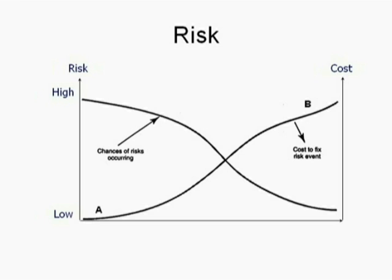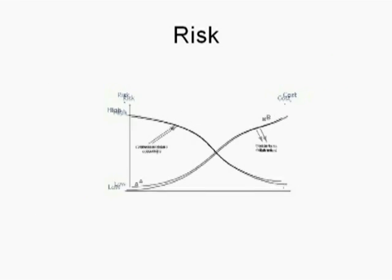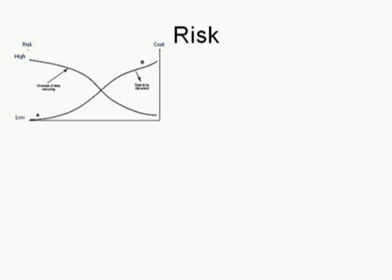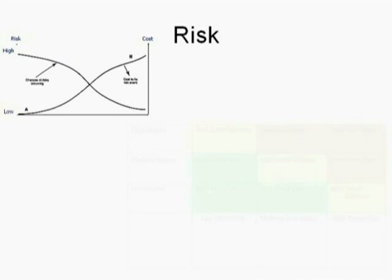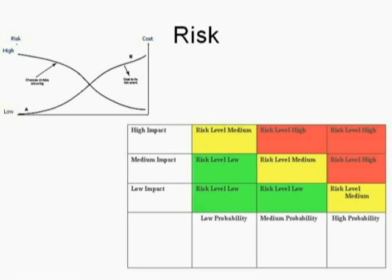In your risk management plan, you've identified potential risks to schedule and budget and strategies to get the project back on plan. Determining the current status of the project using earned value gives you a risk strategy trigger, which you've identified in your risk plan.